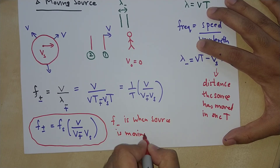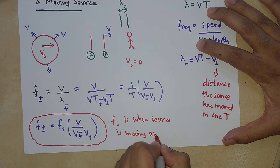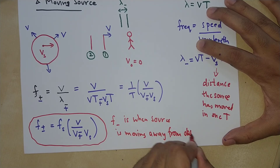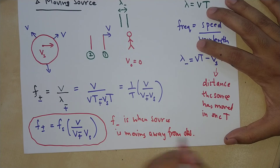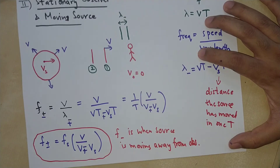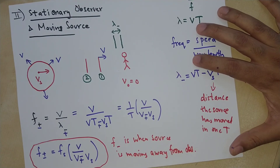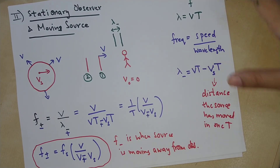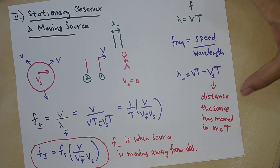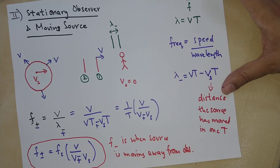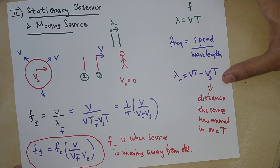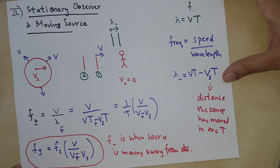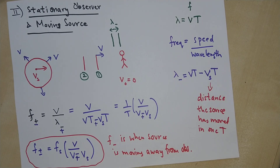So f-minus is when the source is moving away from the observer. This is the complete scenario for when the observer is stationary and the source is moving. If you have any questions, post them in the comments. Thank you for watching.